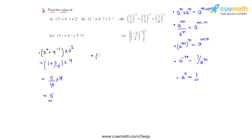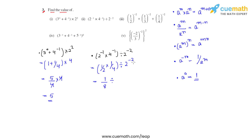The second bit is 2 raised to negative 1 times 4 raised to negative 1, divided by 2 raised to negative 2. That gives us 1 over 2 times 1 over 4, divided by 1 over 4, which is 1 over 8 times 4 over 1, giving us the answer as 1 over 2.